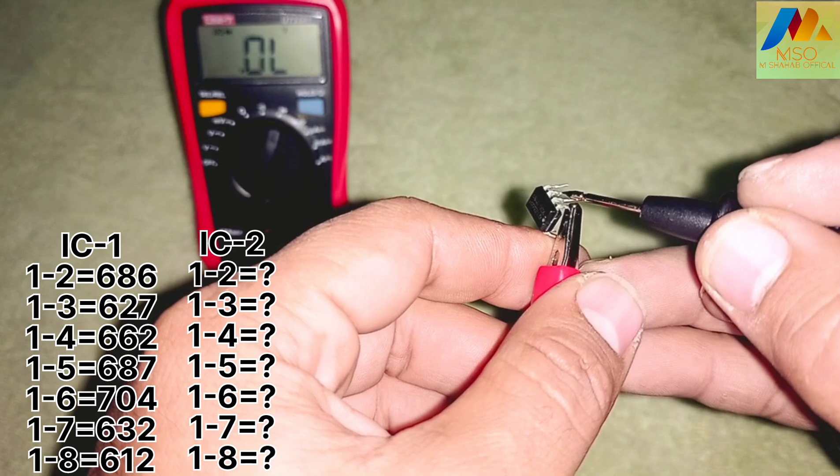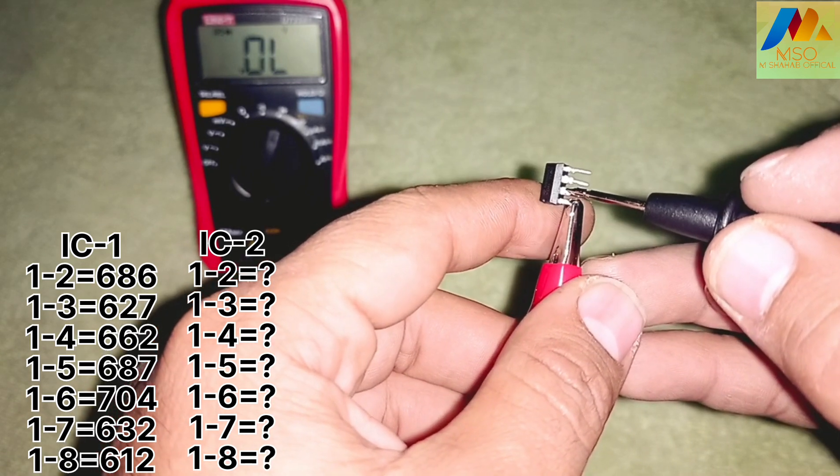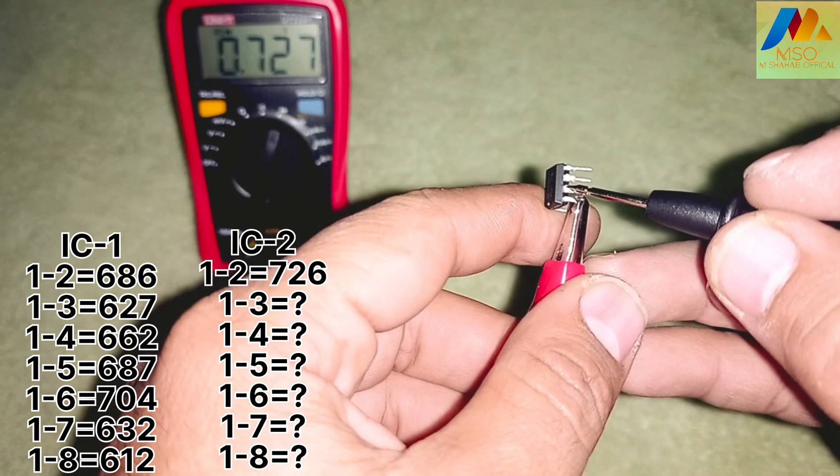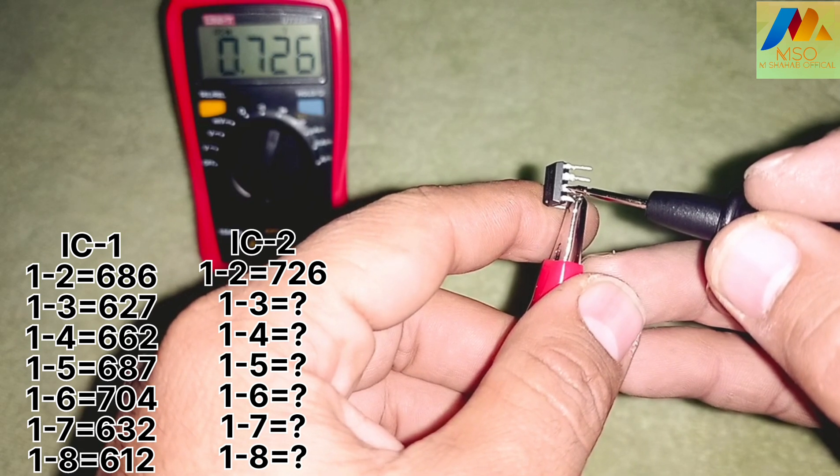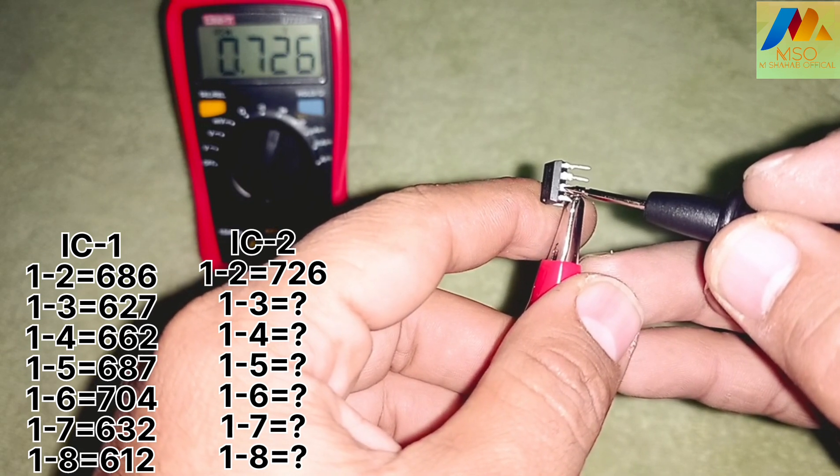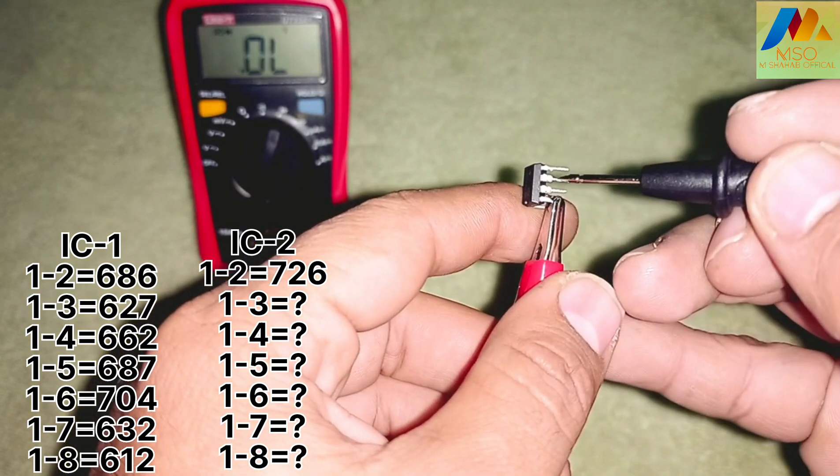Now we will connect the negative probe of the multimeter to second IC pin number 2, 3, 4, 5, 6, 7, and 8 in sequence and note the readings.